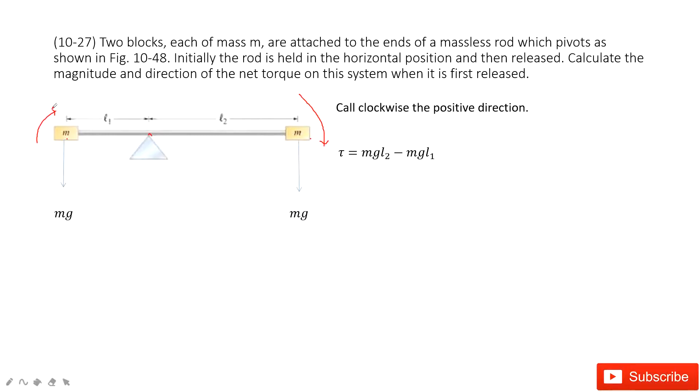If you determine that, this is positive, so the torque for this box is MgL2. The force times the distance, and sine theta is 1 because this is 90 degrees. And this one is negative MgL1, so the torque is MgL2 minus MgL1. Thank you.